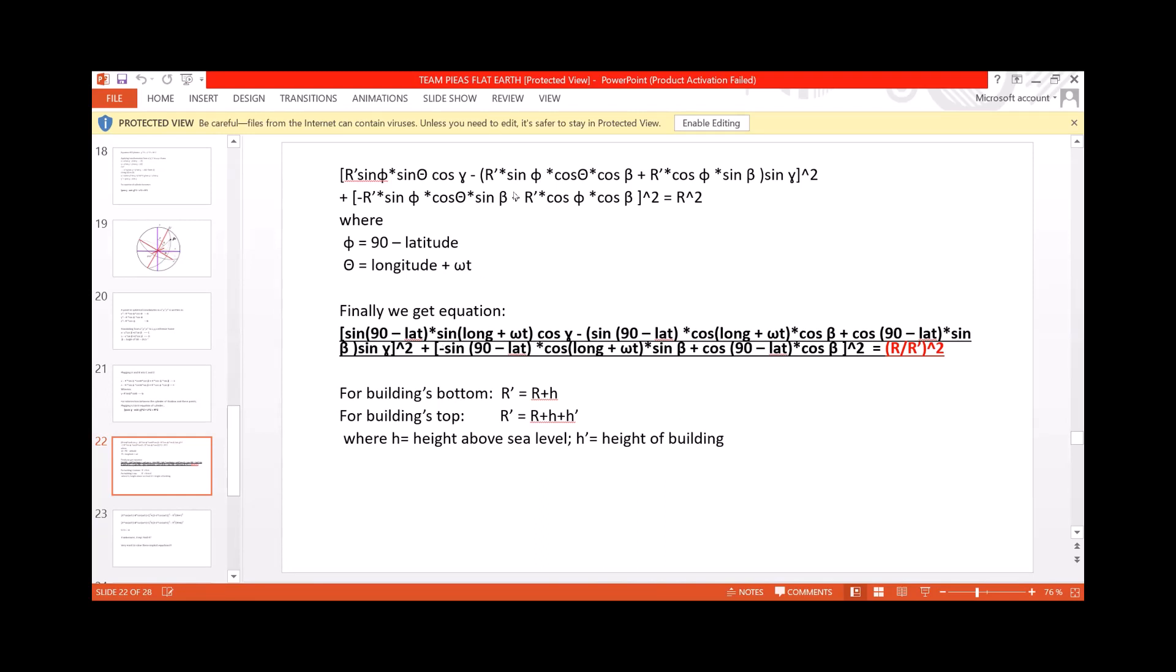Putting all these expressions into the original equation will give us this long equation. This equation tells us the time. This equation will be used for the bottom of the building, when the shadow sweeps to the bottom of the building. Then we use, this is radius of earth, and then this is the height of the building. Actually, this is the height from sea level. And the same equation will be used, but R prime this time will be used in addition, when we add the height of the building. So we will get two equations.